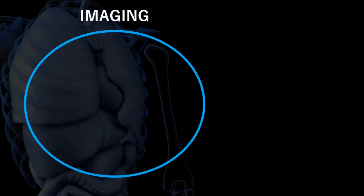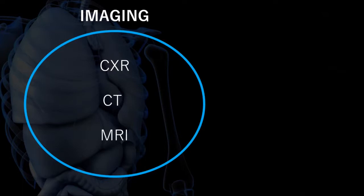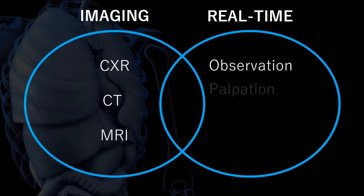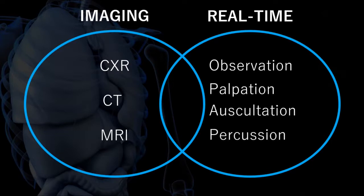When we have imaging modalities to monitor and investigate patients who have suffered blunt chest wall trauma, you have chest X-ray, CT scans, and if need be MRI as well. Most of the time as physiotherapists we'll be using these from other disciplines, but we also have real-time assessment techniques: observation, palpation, auscultation and percussion. These can be done at the bedside repeatedly - before, during, and after any intervention you decide to implement.